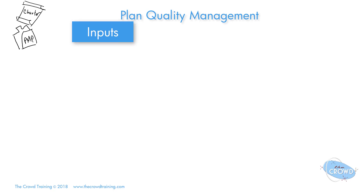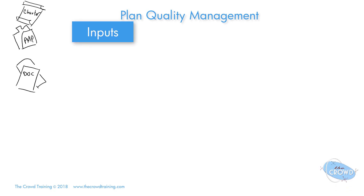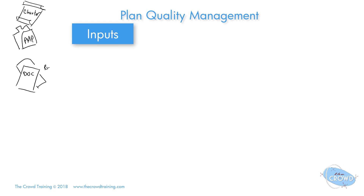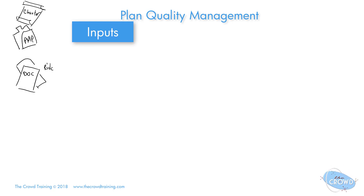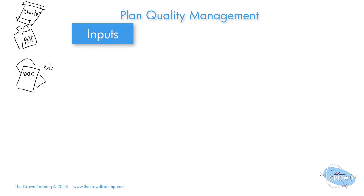We can also use various different project documents. Those documents can range from the risk register to the stakeholder register, because if we're trying to meet the expectations of stakeholders, we have to know who those stakeholders are and what their needs, expectations, and influence are.